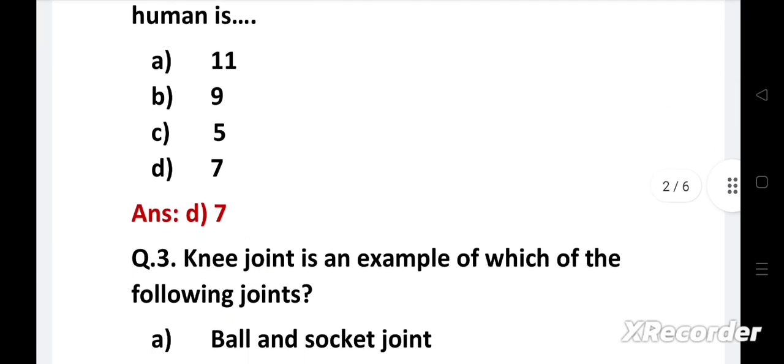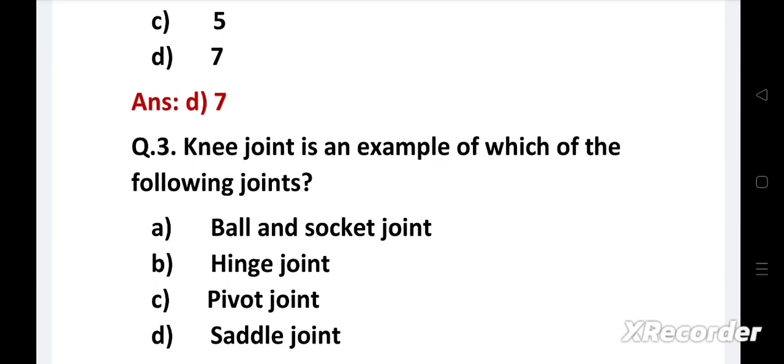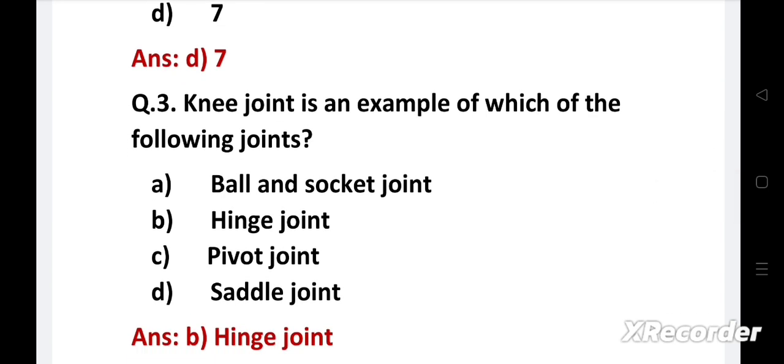Next question: Knee joint is an example of which of the following joints? Option A - Ball and socket joint, B - Hinge joint, C - Pivot joint, D - Saddle joint. The right answer is Option B - Hinge joint.